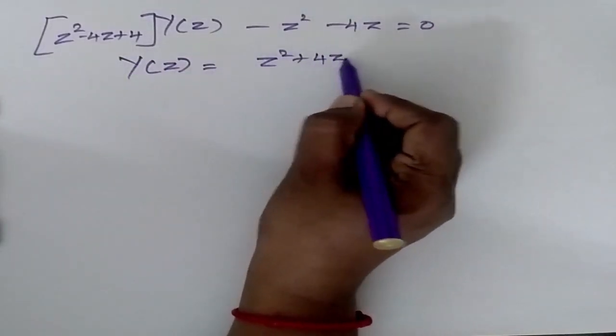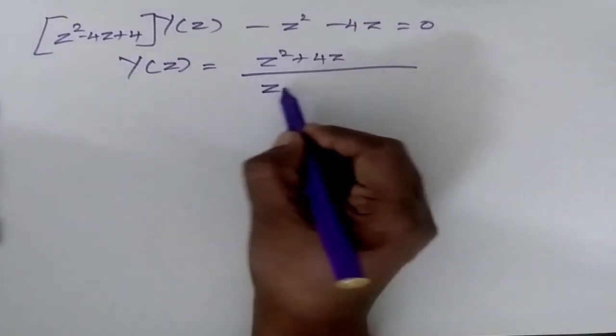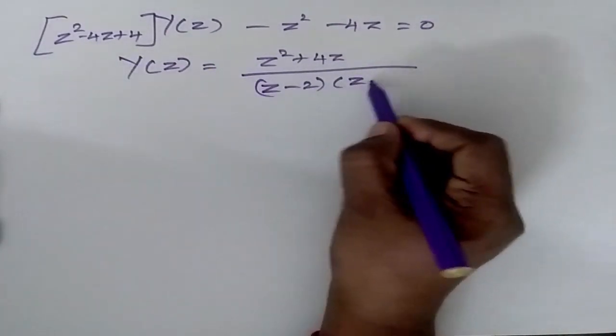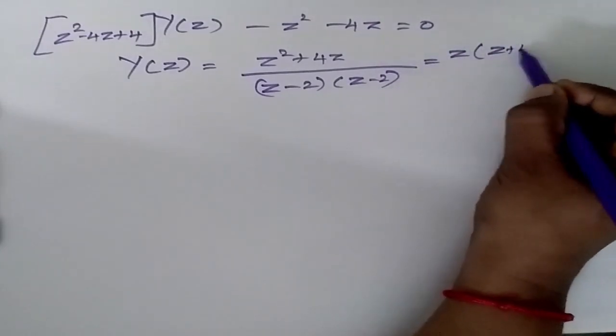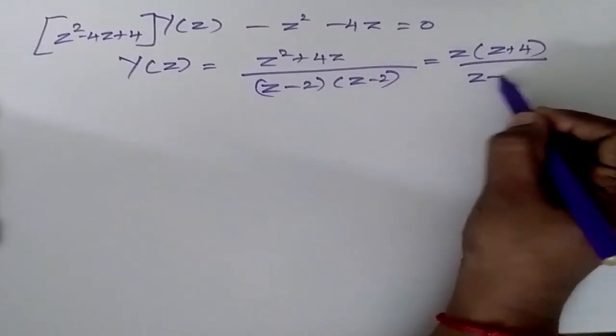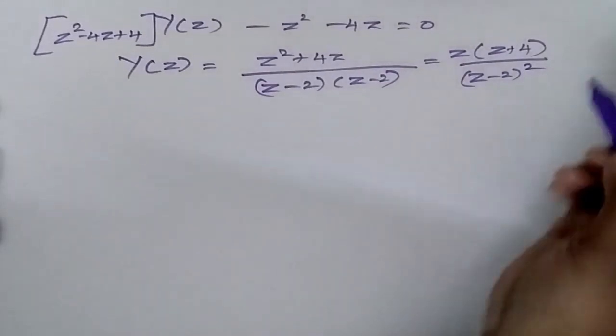So I will be having Z squared plus 4Z by. This can be written as Z minus 2 into Z minus 2. So I am going to take Z common to the outside. Let me have it as whole square.